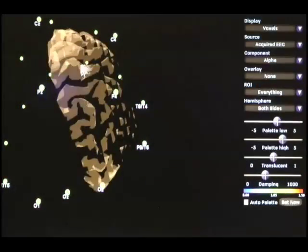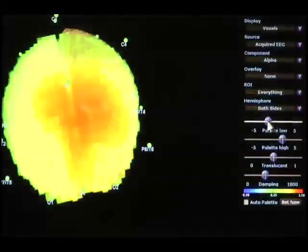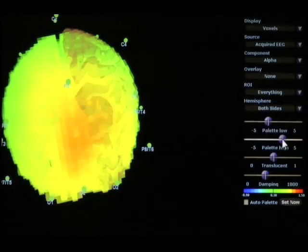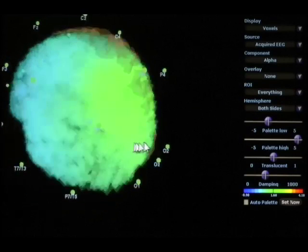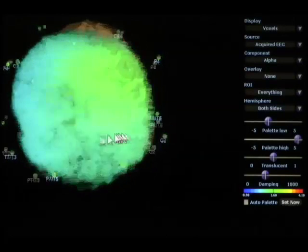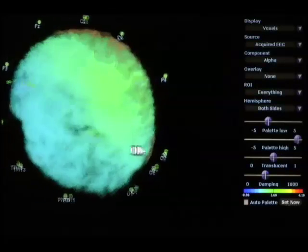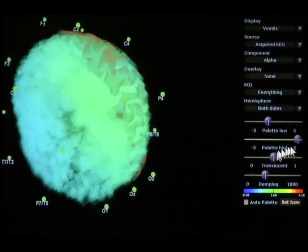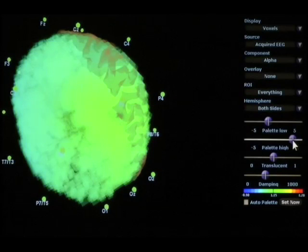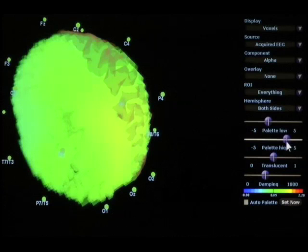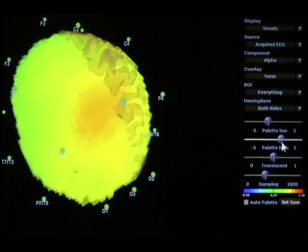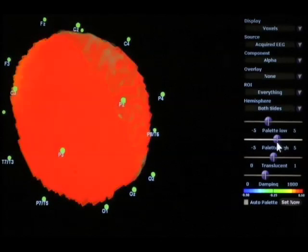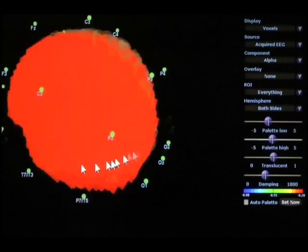Now let's look at palette high. Palette high is the value which is red. If I slide it over to the right, it makes it harder to achieve red. In fact, none of the image is red when I slide palette high all the way to the right. If I slide it to the left, I'm going to begin to see some red. If I just slide it a little bit, I can now pinpoint another focal area. If I slide it more to the left, eventually the whole head becomes red.